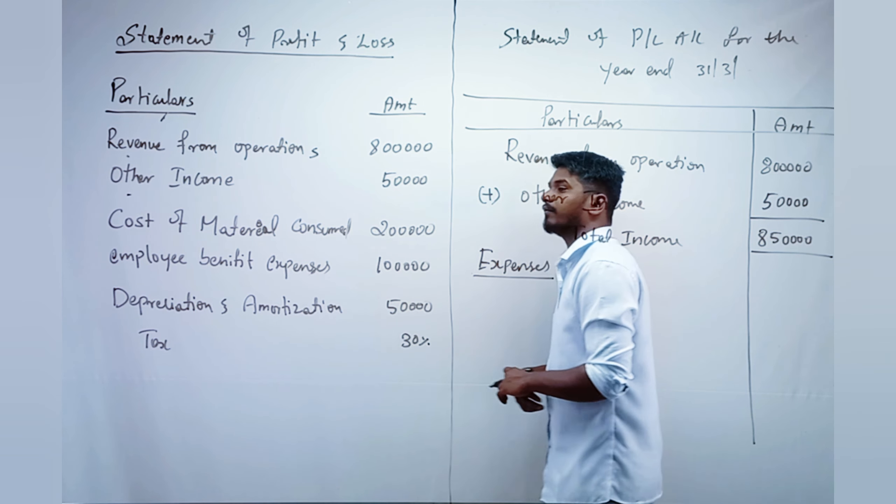Total Expenses comes to 3 lakh 50,000. Next, we calculate Profit Before Tax. Total Income minus Total Expenses: 8 lakh 50,000 minus 3 lakh 50,000 gives us 5 lakh as Profit Before Tax.